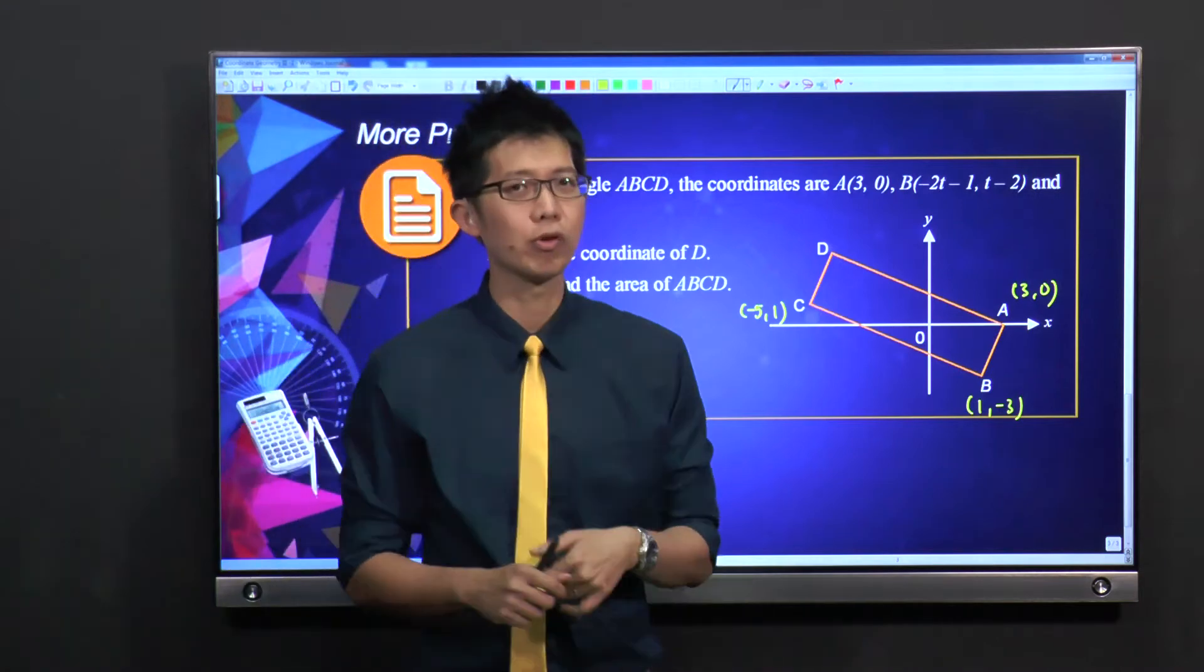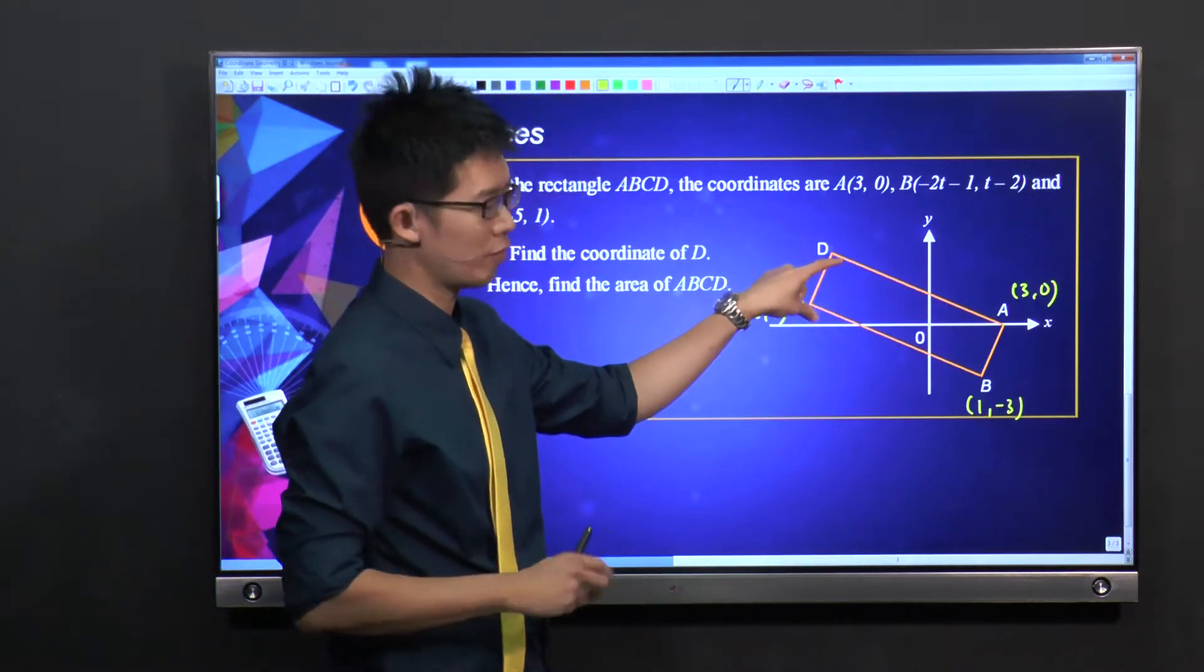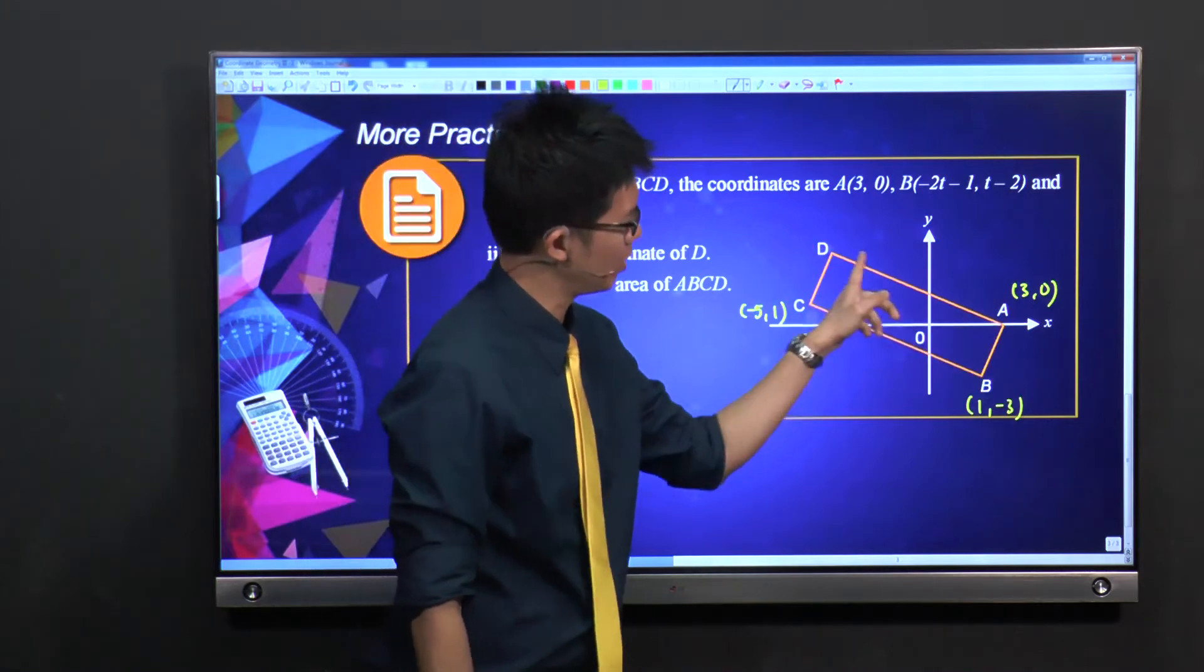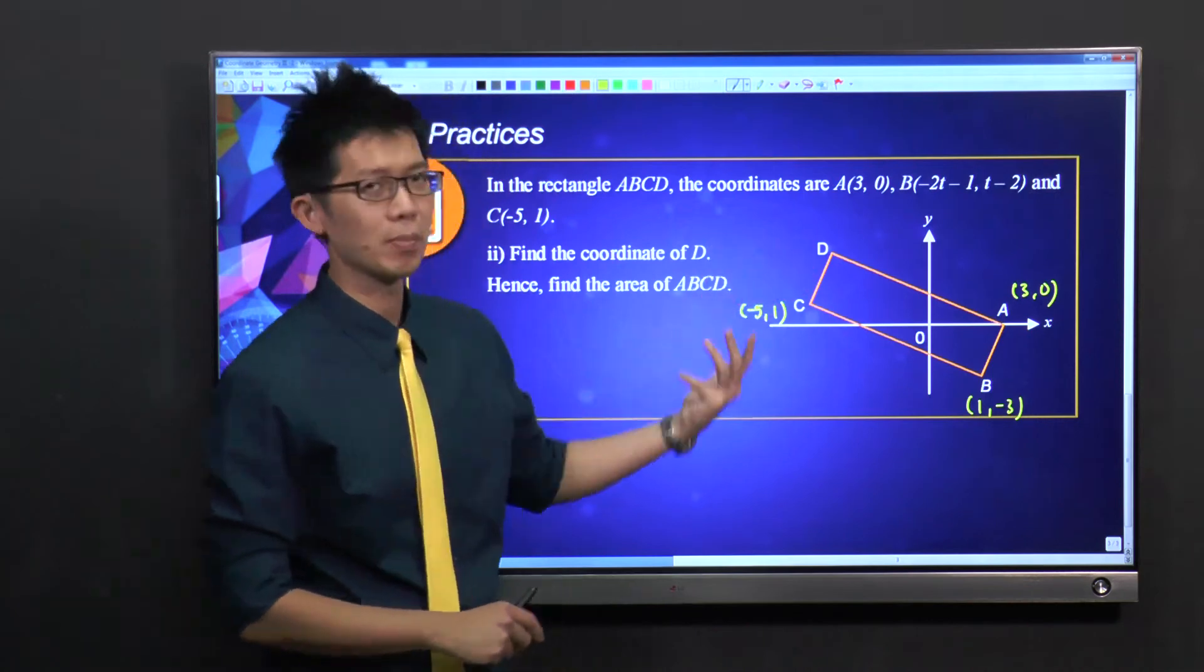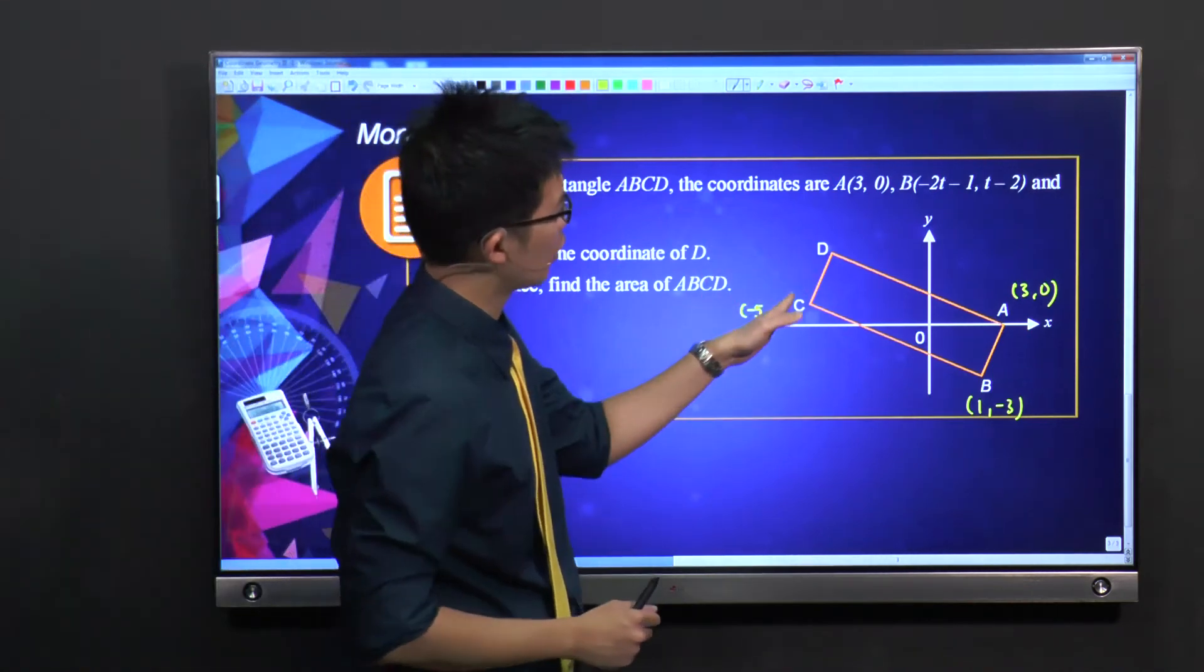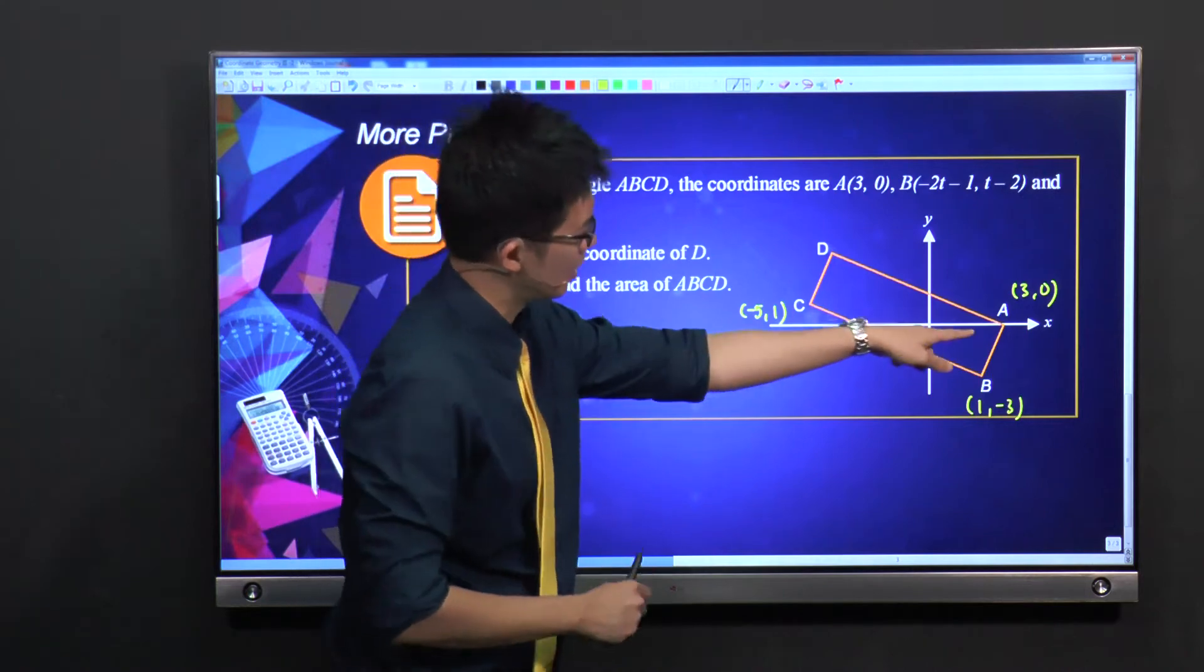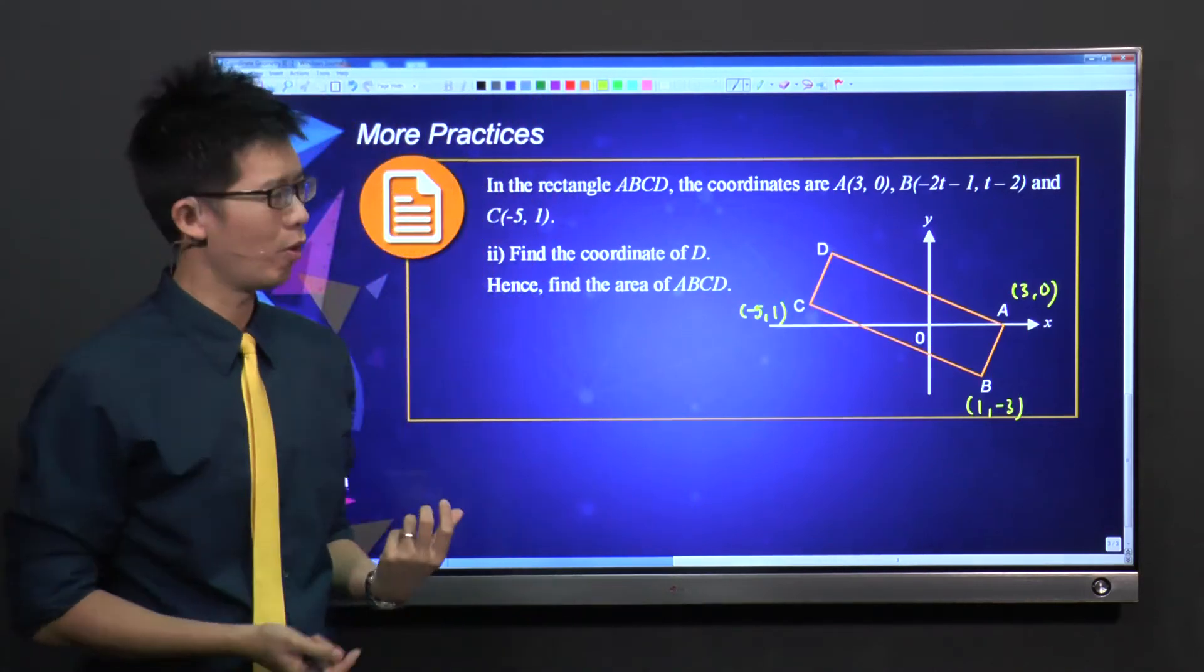But some people may want to use gradient. You can use gradient, form an equation with x and y, form another gradient equation with D and A, and then solve simultaneously. That will also work. Some people may choose to find the equation of CD and the equation of AD and then do the intersection with simultaneous equations.